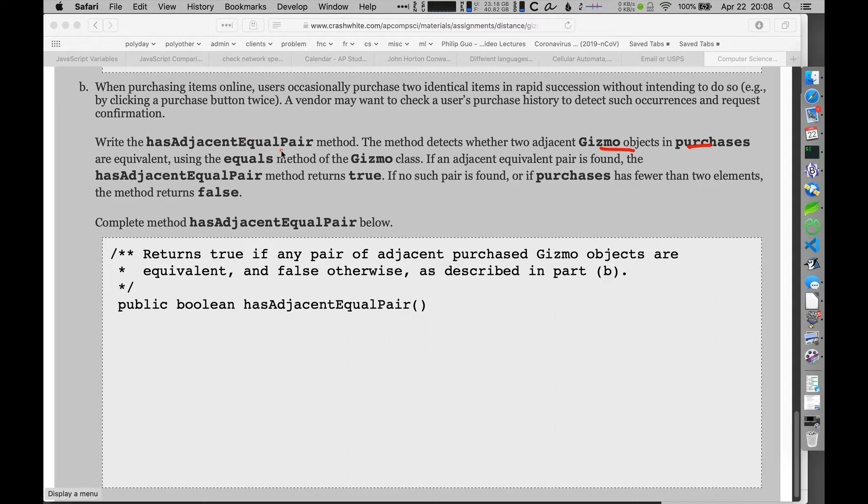So hasAdjacentEqualPair is gonna go through apparently and look to see if any pair of items in there. So if I've got gizmo, gizmo, gizmo, I've got a series of these, and what I'm thinking is gonna happen is it's gonna compare these two, and if they're adjacent, if they're the same thing and they're adjacent, then we're gonna send back true because we have an adjacent pair.